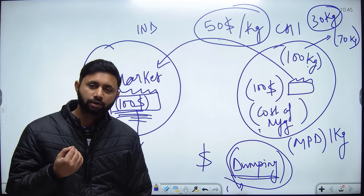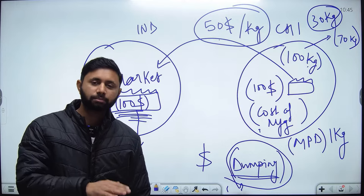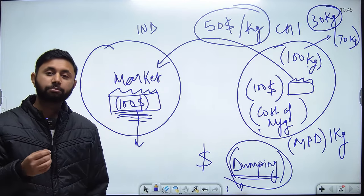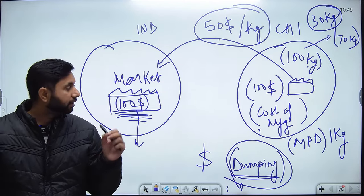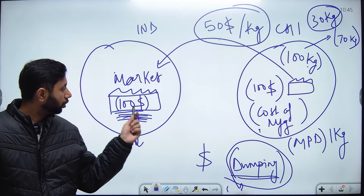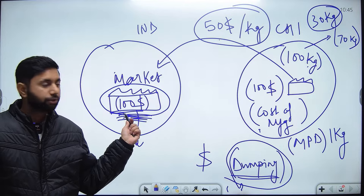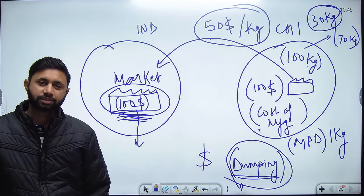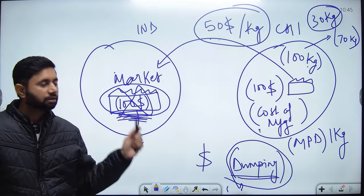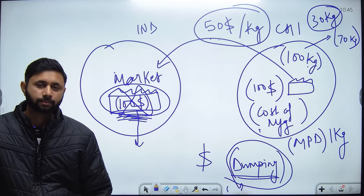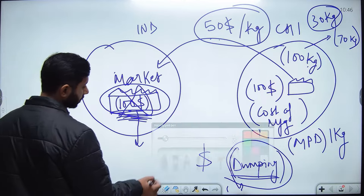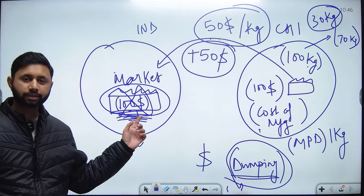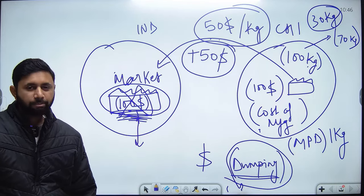When a foreign country exports a product below its cost of manufacturing, the process is called dumping. This has a deteriorative impact on the domestic market because Indian manufacturers cannot produce below $100 without incurring a loss. If they have to compete with $50 per kg MPD from China, nobody will buy from them. So the government imposes anti-dumping duty to protect domestic producers.